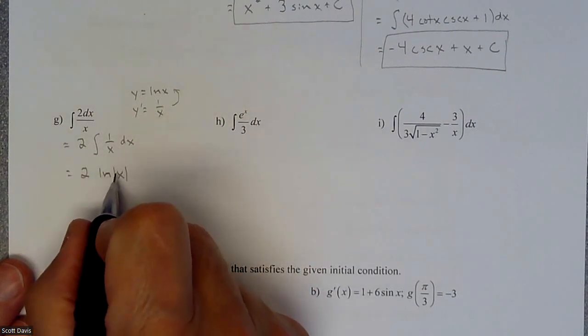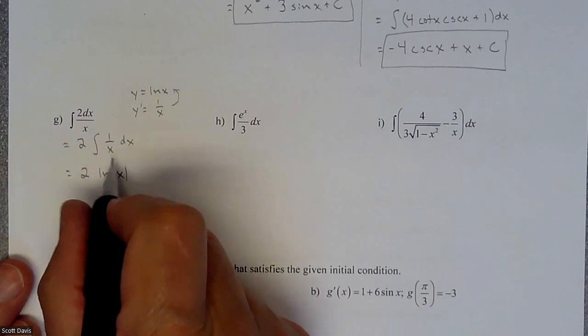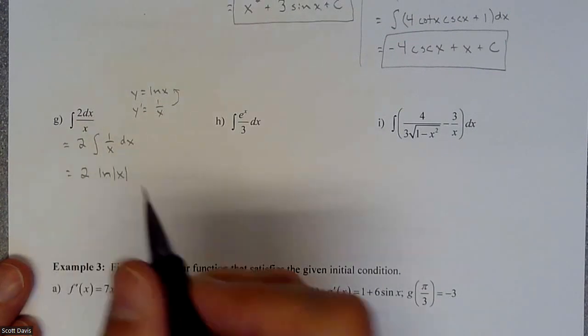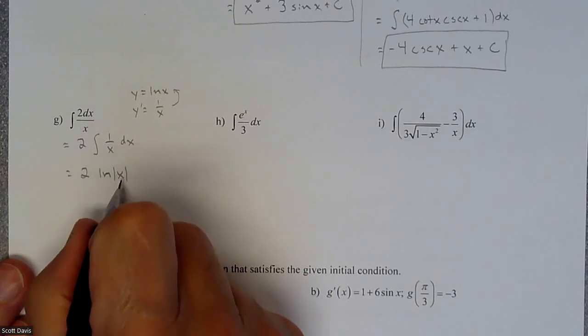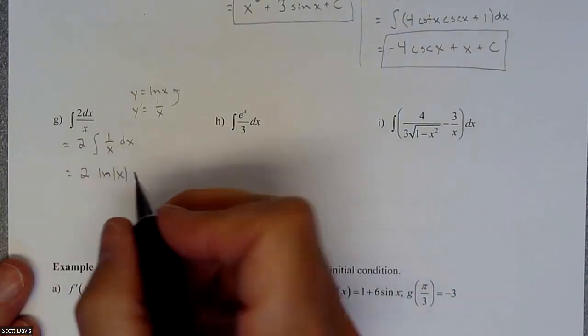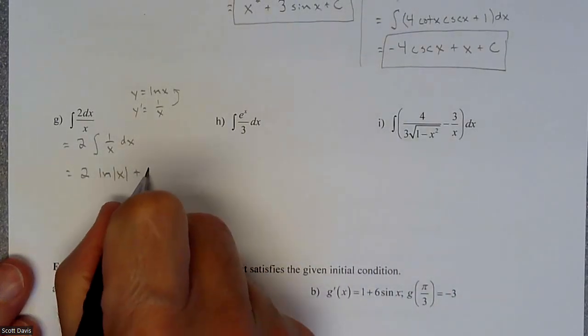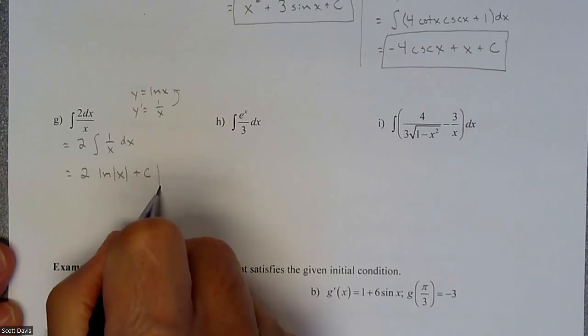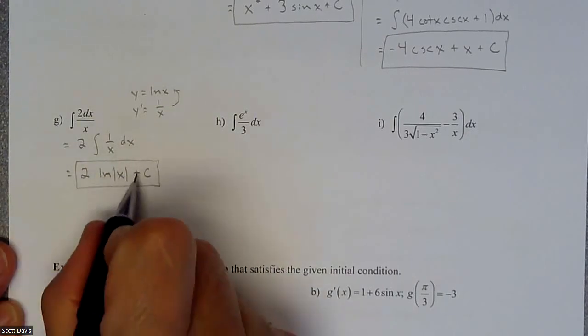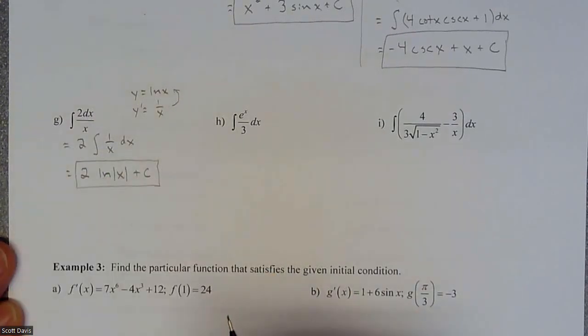But when you do this, we still have that constraint of zero would kind of apply here, but you also can't have any negatives on that. So we're going to add the absolute value bars to take care of that. And then we'll add our plus some sort of a constant. So if we were to do the derivative of that, we would get right back to that piece.